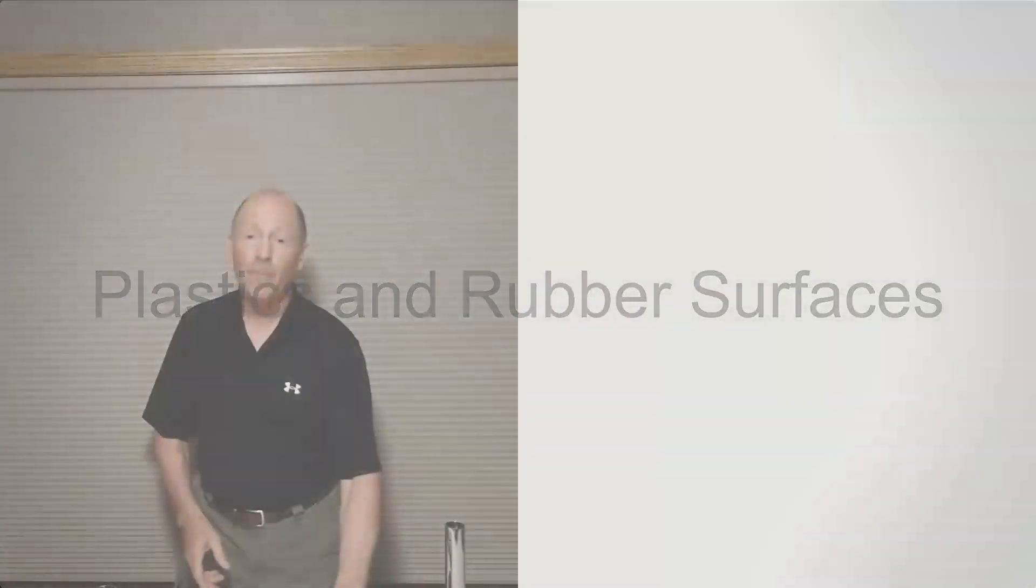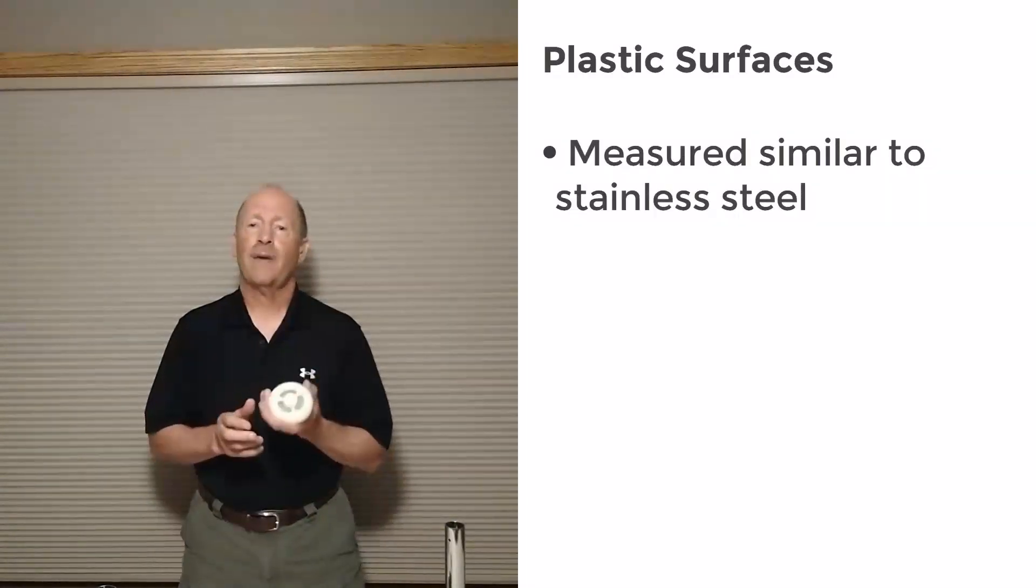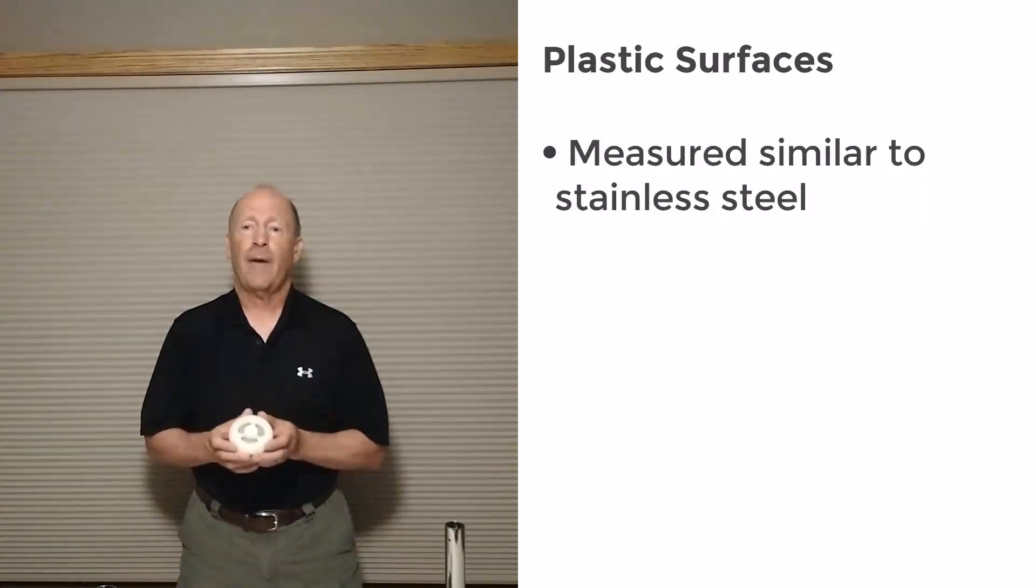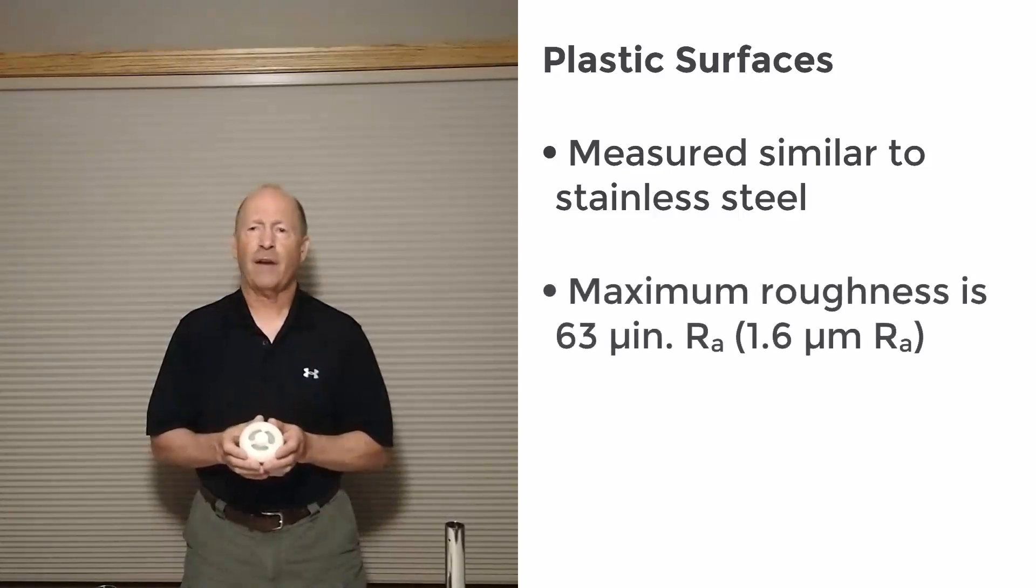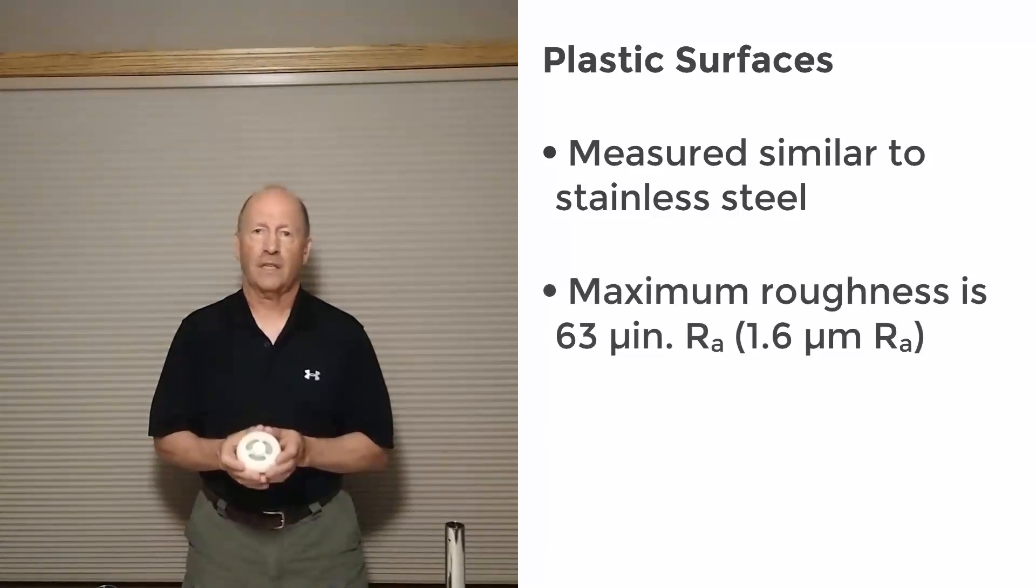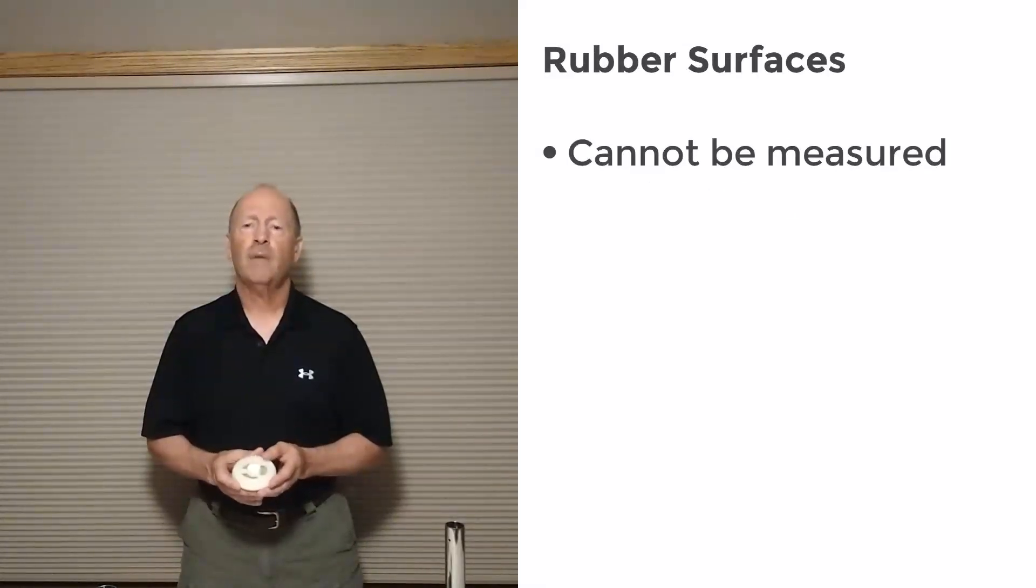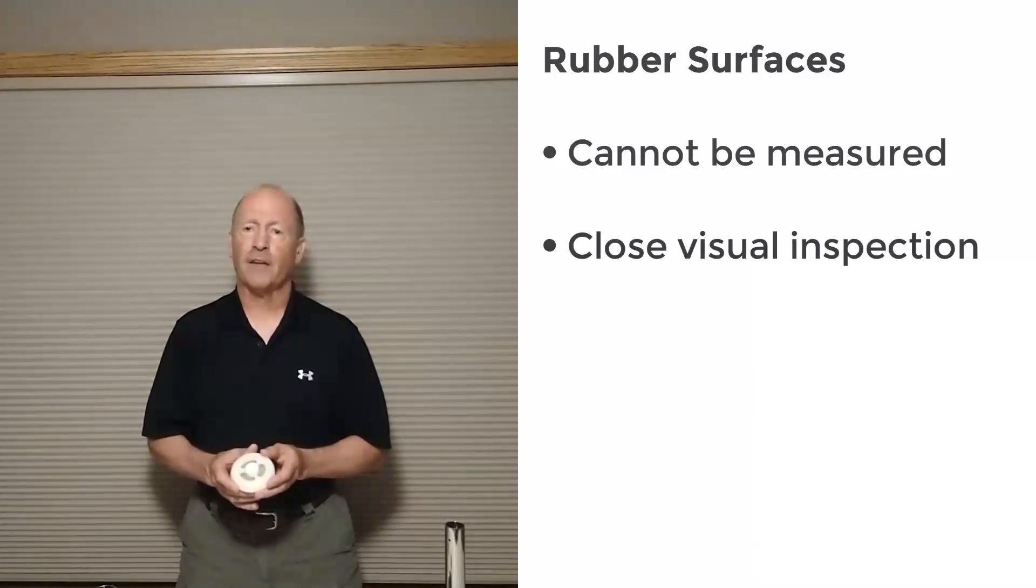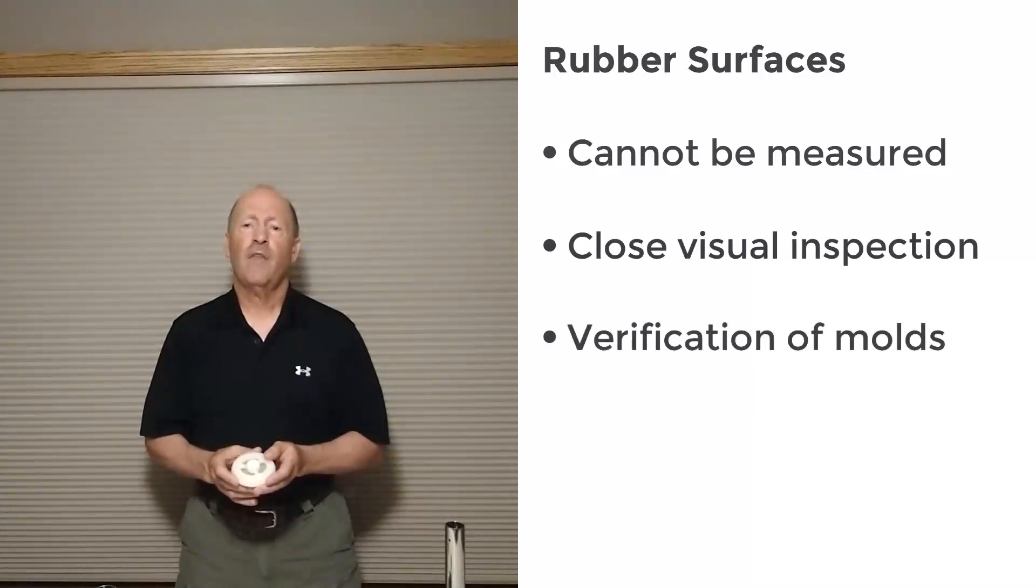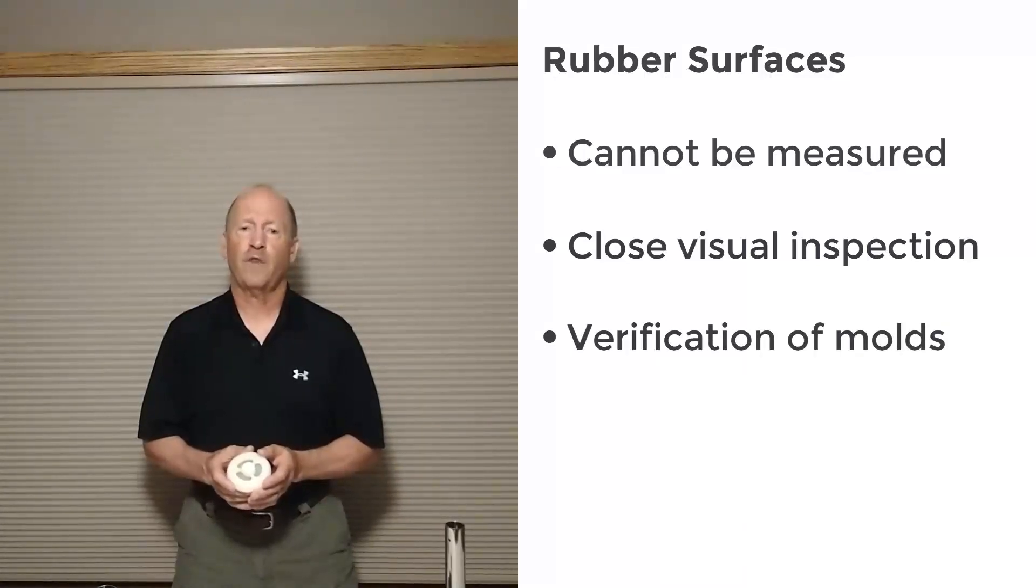On many plastic components, the surface can be measured in the same way as we measure on stainless steel, but the maximum roughness is 63 micro-inch RA or 1.6 micron. However, we cannot measure the surface finish on rubber components because it is soft. So for rubber, we rely on close visual inspection and verification that the molds used to form the components also have the required surface finish.